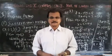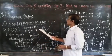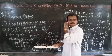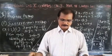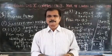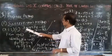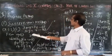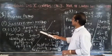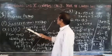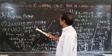We shall take the first question from Exercise 3.3, page number 53, question number one. The equations are: x plus y equal to 14 — that is equation number 1 — and x minus y equal to 4 — that is equation number 2.